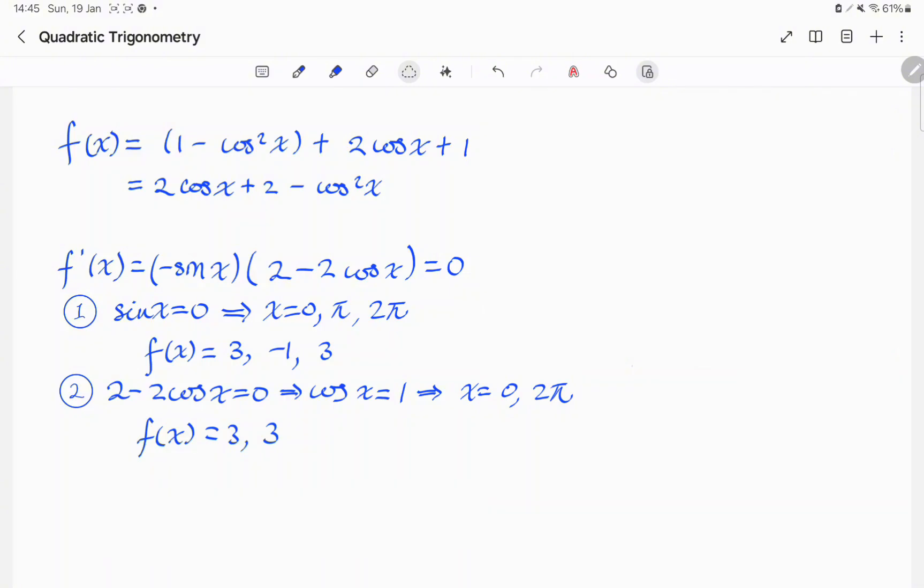In the second case, 2 minus 2 cosine x is equal to 0, and so cosine x is equal to 1. Therefore, x is equal to 0 or 2 pi. In this case, we have f of x equal to 3 or 3, respectively.